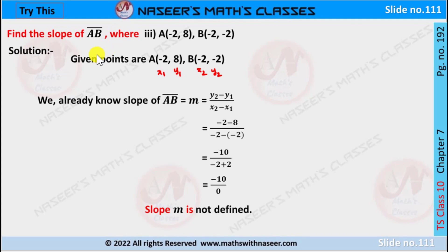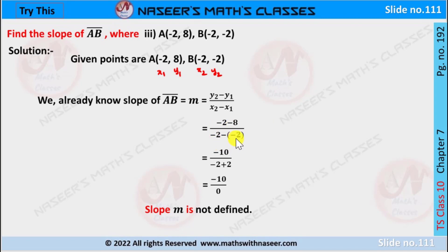Third problem: find the slope of AB where A is (-2, 8) and B is (-2, -2). So x1 is -2, y1 is 8, x2 is -2, y2 is -2. Using slope formula m equals (y2 minus y1) by (x2 minus x1): minus 2 minus 8 upon minus 2 minus minus 2. The numerator becomes minus 10, and the denominator: minus into minus becomes plus, giving minus 2 plus 2 equals 0. So minus 10 by 0 is not defined. Therefore slope m is not defined.